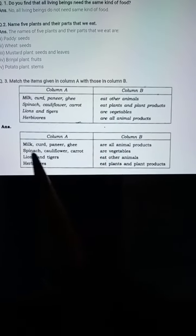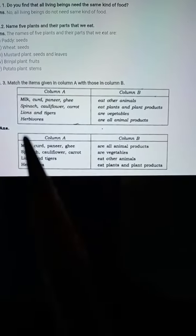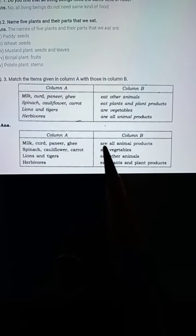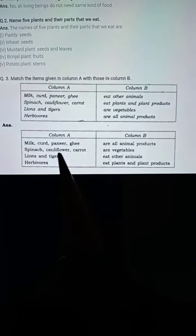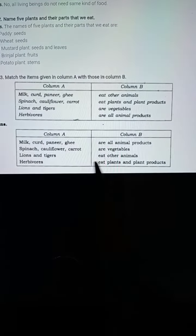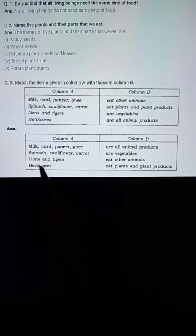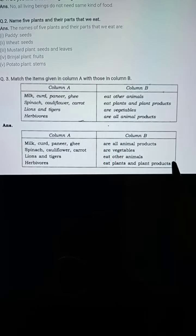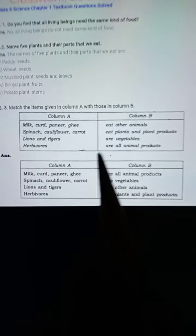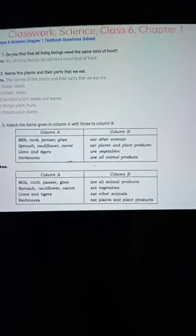You have to match it like this: milk, curd, paneer, ghee are all animal products; spinach, cauliflower, carrot are vegetables; lions and tigers eat other animals; herbivores eat plants and plant products. This is the answer to this matching. You have to read, write, and bye, thank you.